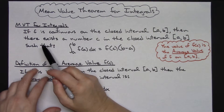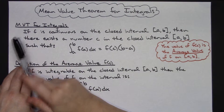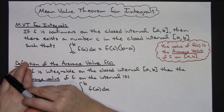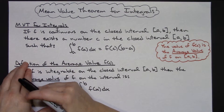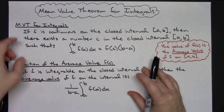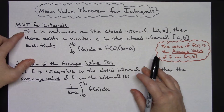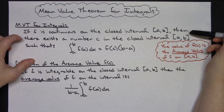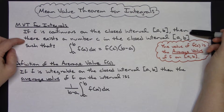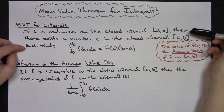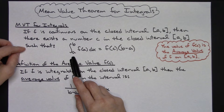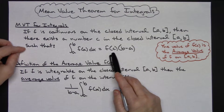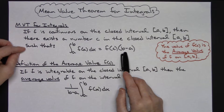So to start with, we've got the mean value theorem for integrals. If you do recall, there was a mean value theorem for derivatives, and we also have one for integrals. It states that if f is continuous on the closed interval from a to b, then there exists a number c in the closed interval from a to b such that the integral from a to b of f(x) dx is equal to f(c) times the quantity b minus a.